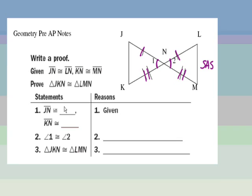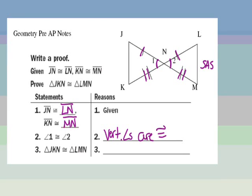JN is congruent to LN, KN is congruent to MN — make sure when you write in these segments you show them as segments by putting a bar on top. And then angle 1 is congruent to angle 2, because vertical angles are congruent. There's my first side, there's my second side, there is the angle in between them. Finally, our triangles are congruent by the side-angle-side congruence postulate.